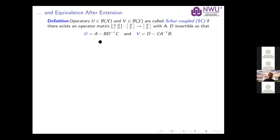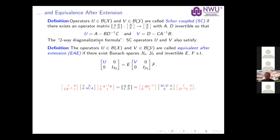The other relation I mentioned is equivalence after extension. We say U and V are equivalent after extension if you extend the operators U and V with some identity operators and then they become equivalent — meaning you can find invertible operators E and F so that we have this relation. One can quite easily see that if two operators are Schur coupled they're also equivalent after extension, using the two-way factorization where all the red terms are invertible.